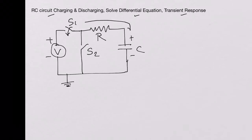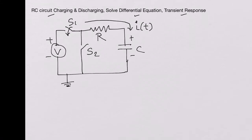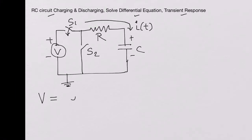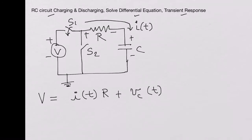When switch S1 is closed, there is a current that starts flowing into the RC circuit, which we can write as I(T) — a transient current that changes with time. Now if you look at the equation during charging, the total voltage V would be the voltage dropped across the resistor, which is I(T) multiplied by R, plus the voltage across the capacitor, V_C(T). We know that I(T) is the same current that flows in both the capacitor and the resistor, so I(T) = C · dV_C(T)/dt.